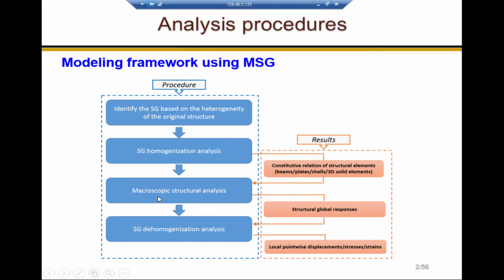After we obtain the constitutive relation over structural elements, we can carry out macroscopic structural analysis to get the structural global responses. Then we can use the global responses as input in SG de-homogenization analysis to get local pointwise displacement, stress, and strain. The SG homogenization and de-homogenization analysis are carried out in SwiftComp.